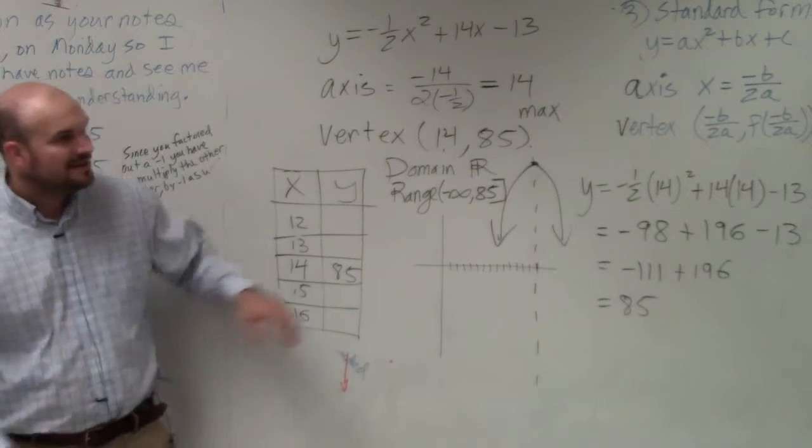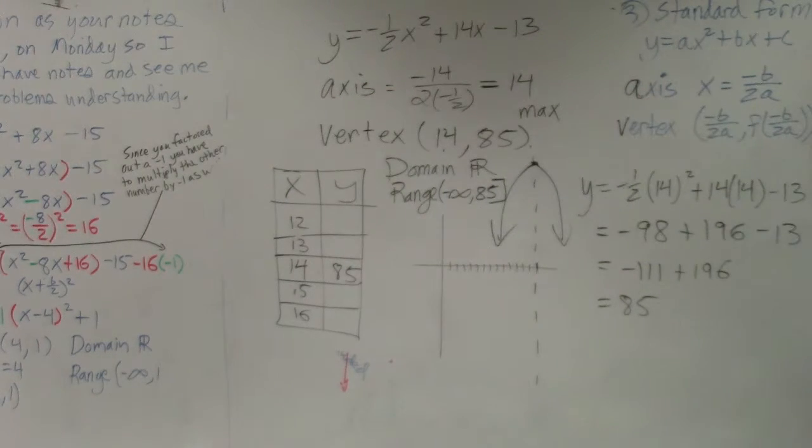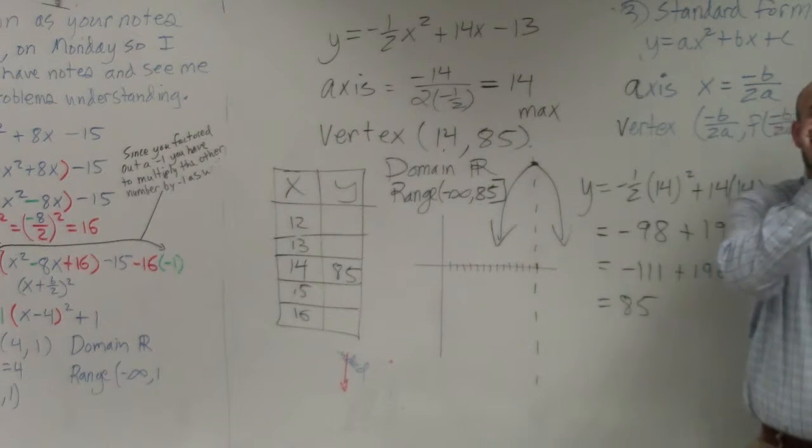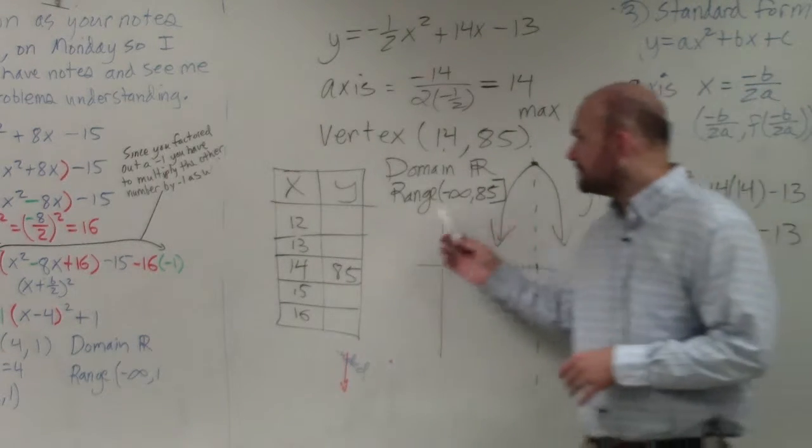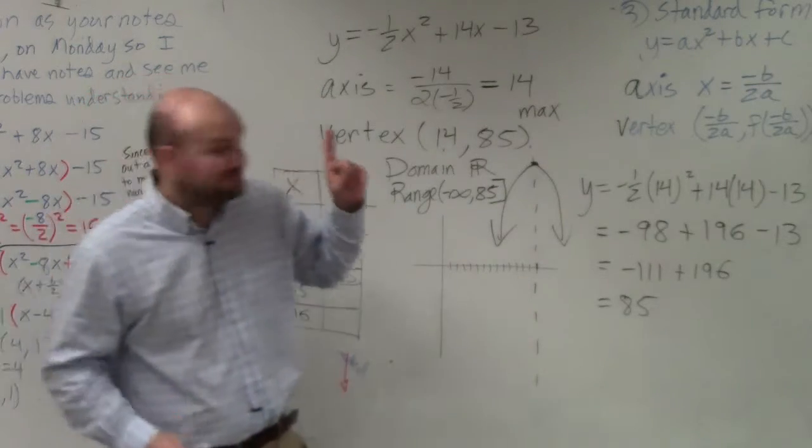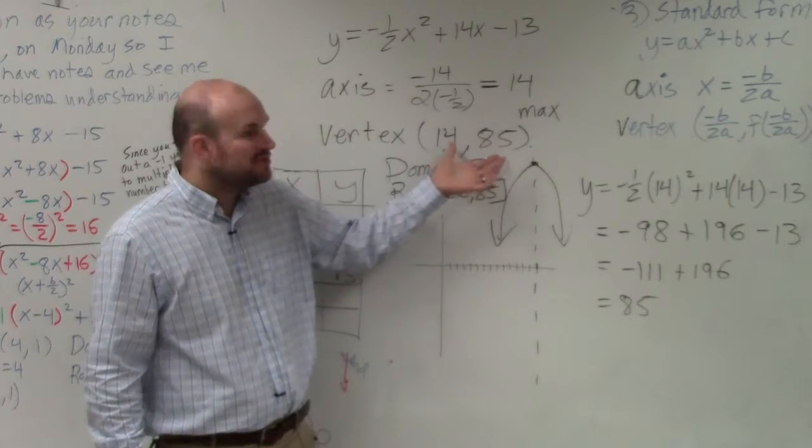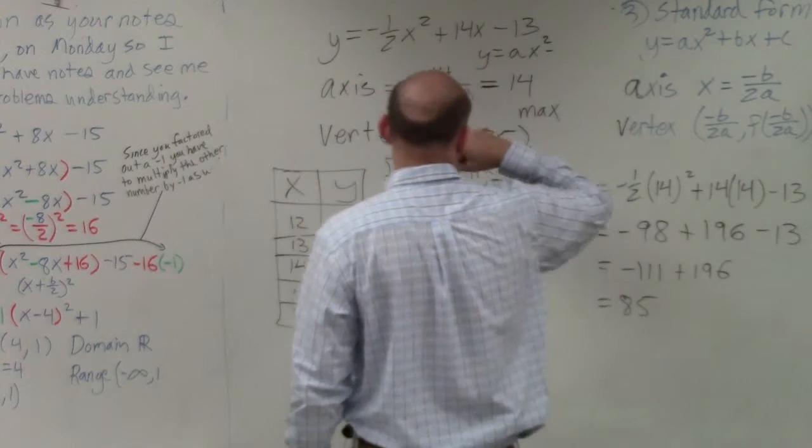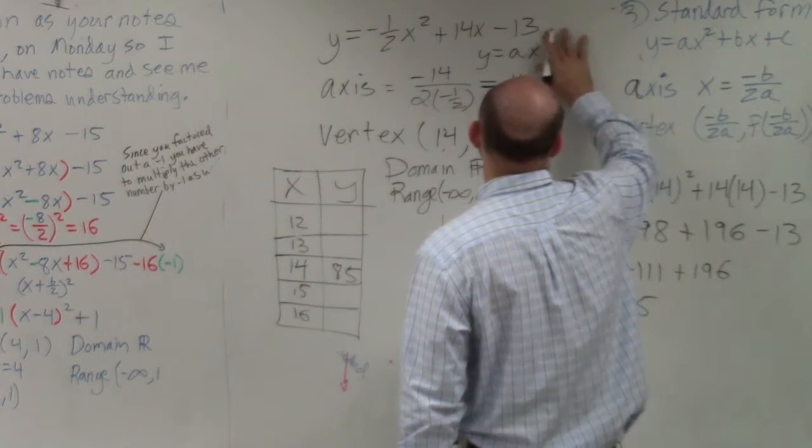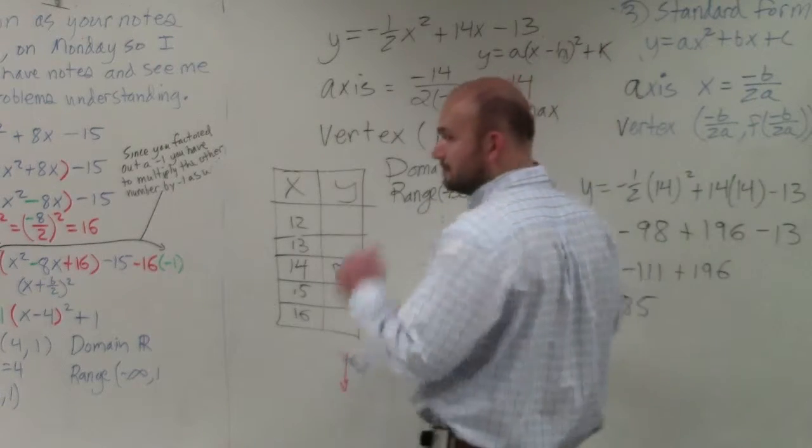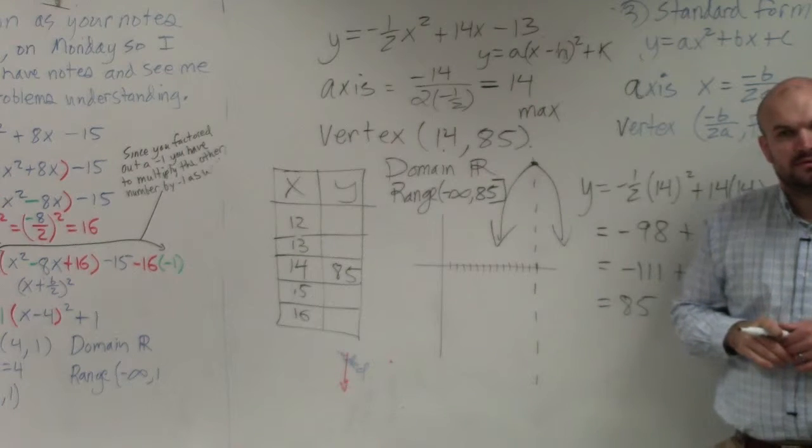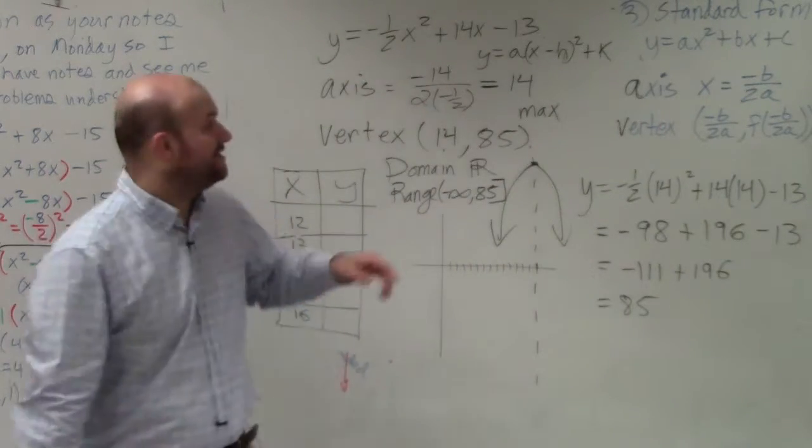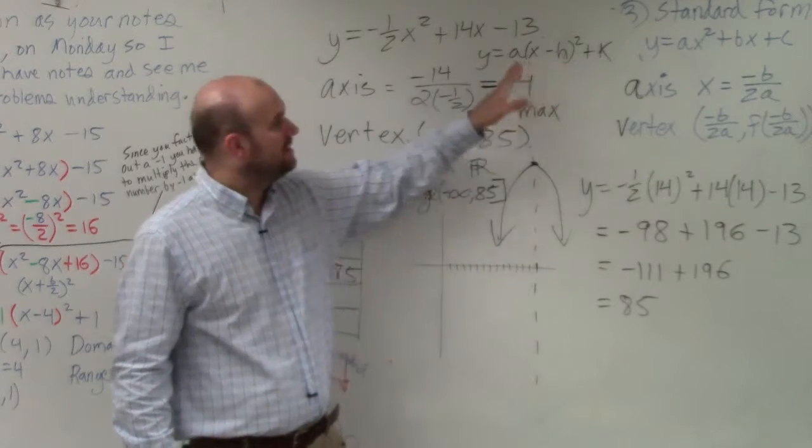One last thing I want to get over with you guys. And this will be the highlight of everything. Does anybody know what the vertex form of that equation would be? Anybody want to try it? Try to see if you guys can write this in vertex form. Write this equation in the vertex form. Now, think about it. You know what the vertex is. So if I gave you the vertex, can you rewrite it in vertex form? Remember vertex form. Y equals A times x squared minus b, or x squared minus, or sorry, x minus h squared plus k.